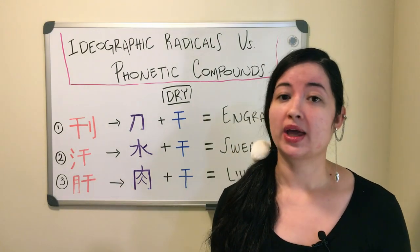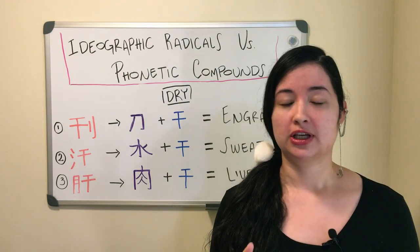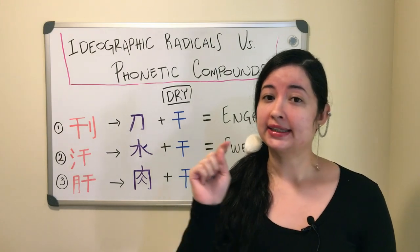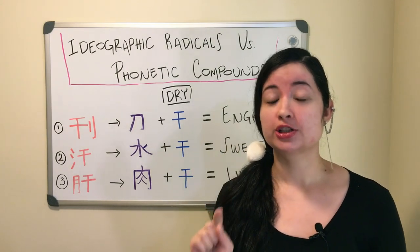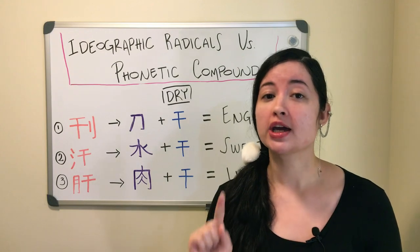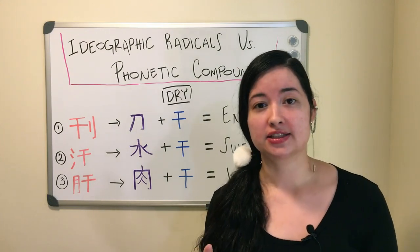On the other hand we have Phonetic Compound. Phonetic compounds are those found in the kanji that will help you determine what the ON reading of the kanji is going to be.